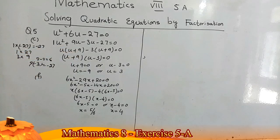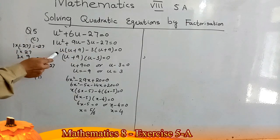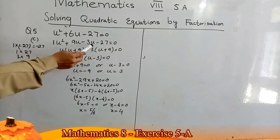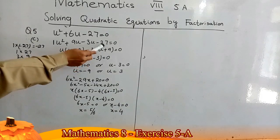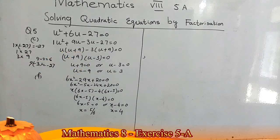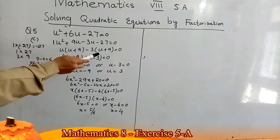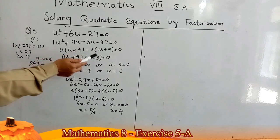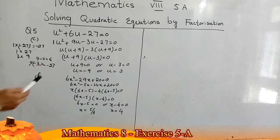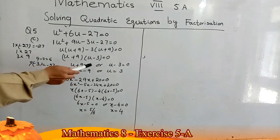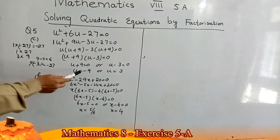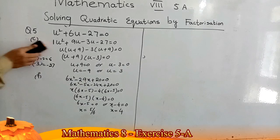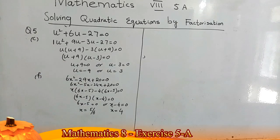So: u² + 9u − 3u − 27 = 0. From the first two terms I take u as a common factor: u(u + 9). From the last two terms I take −3 as a common factor: −3(u + 9). Now (u + 9) is common, giving (u + 9)(u − 3) = 0. Either u + 9 = 0 giving u = −9, or u − 3 = 0 giving u = 3.